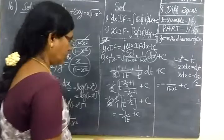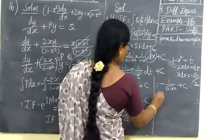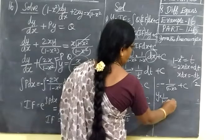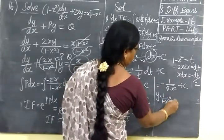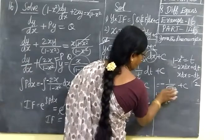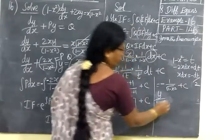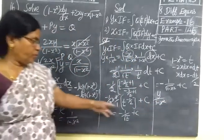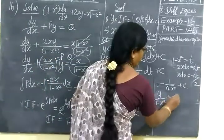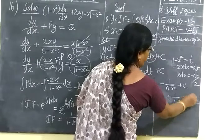So putting it all together on the left side we already have y by 1 minus x squared. We can rearrange to write y by 1 minus x squared plus 1 by root of 1 minus x squared equal to c. This is the required solution, with the denominator terms identified and simplified.